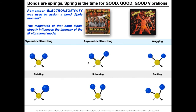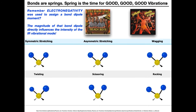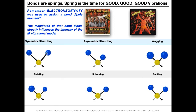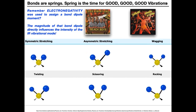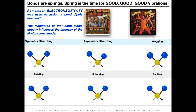There are six common vibrational modes. Symmetric stretching: two atoms bonded to a central atom stretch away symmetrically. Asymmetric stretching: one moves away, one moves closer. Wagging: both move toward you and away at the same time. Twisting: one moves toward you, one away. Scissoring: they move toward and away from each other in a scissoring motion. Rocking: both move in the same direction in the same plane. These are the common vibrational modes observed in an IR spectrum.